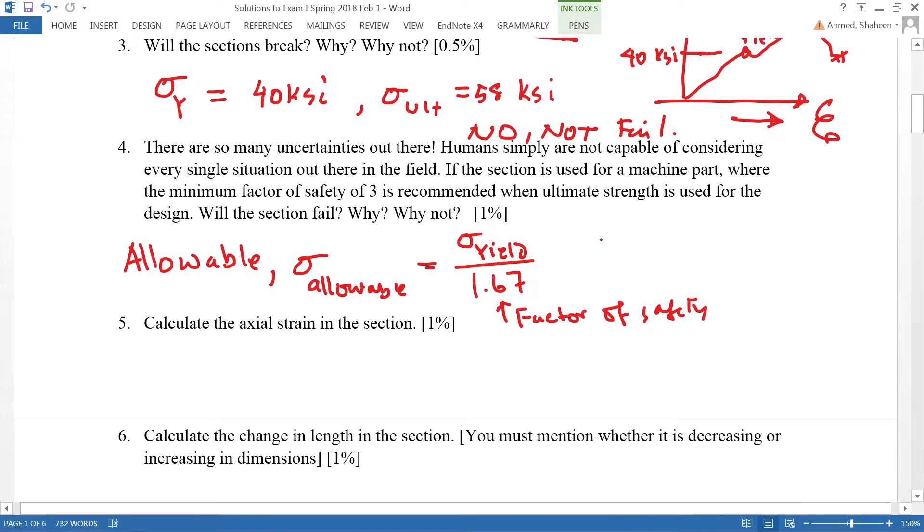You could also use the ultimate strength to calculate the allowable, which is sigma ultimate divided by the factor of safety. In that case, if you use ultimate strength, typically a factor of safety of 3 is used.